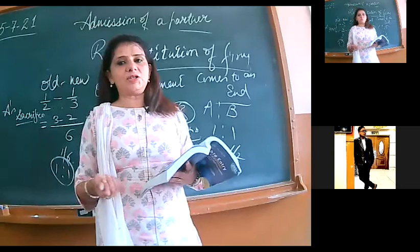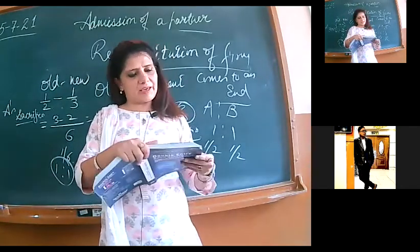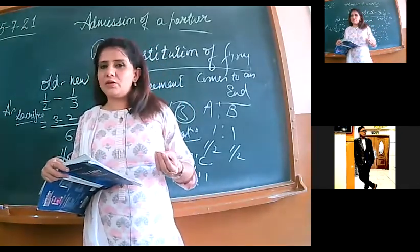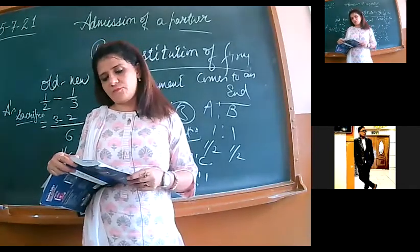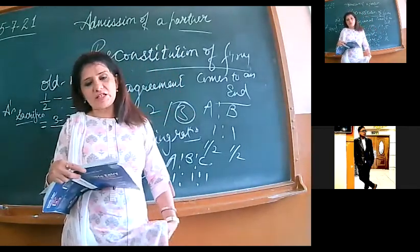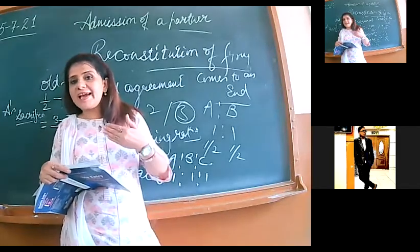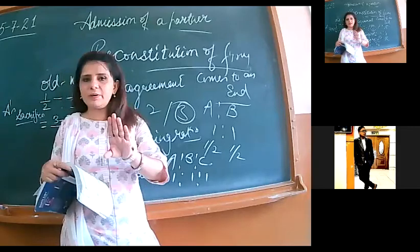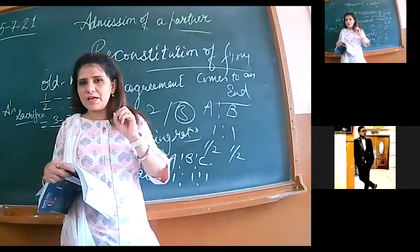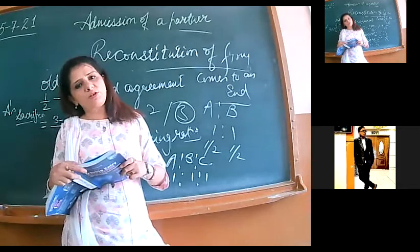Old minus new. A's sacrifice: A's old is one by two, new is one by three. Old is always greater because he is sacrificing in favor. LCM is six. This is three minus two, that is one by six. That is A's sacrifice. First term topic is how to calculate sacrificing ratio. B's will also be the same. If someone asks me sacrificing ratio, it's one is to one, one by six is to one by six.